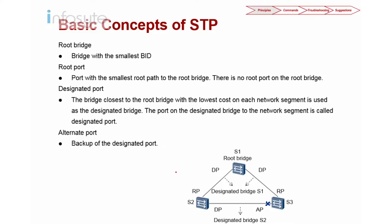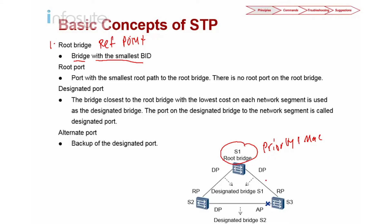Next we look into the mechanism for choosing which port is blocking and which is forwarding. First we have the root bridge, which is the reference point — the root of our entire spanning tree. The switch with the smallest BID, or bridge ID, becomes the root bridge. The bridge ID is a combination of the switch's priority and MAC address. The port with the smallest root path cost to the root bridge is called the root port.